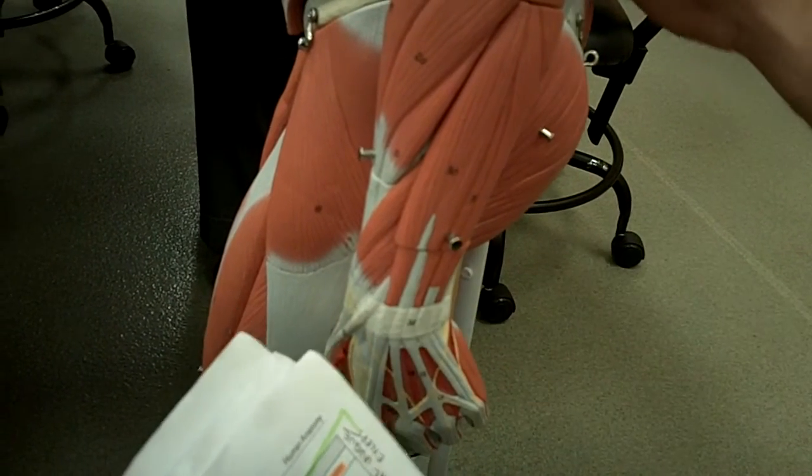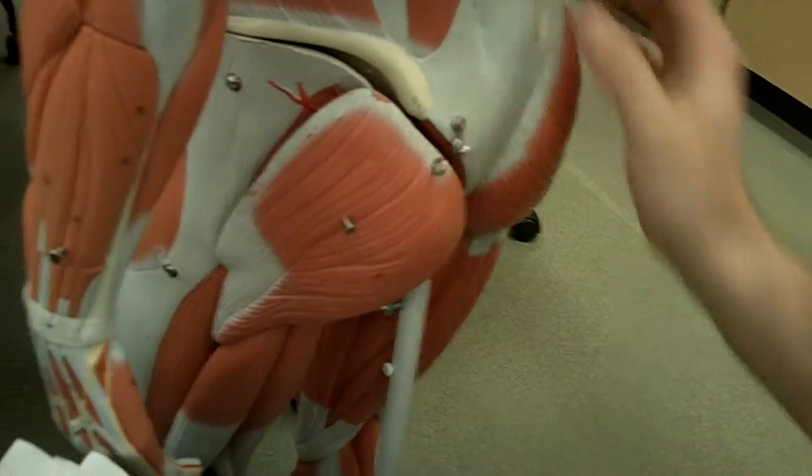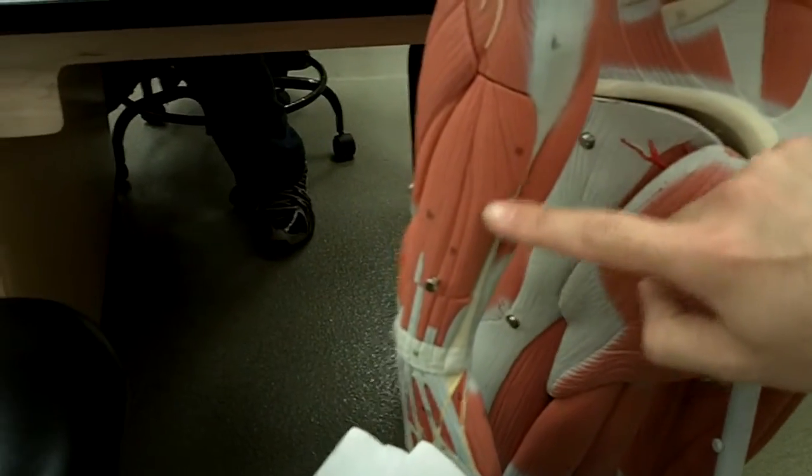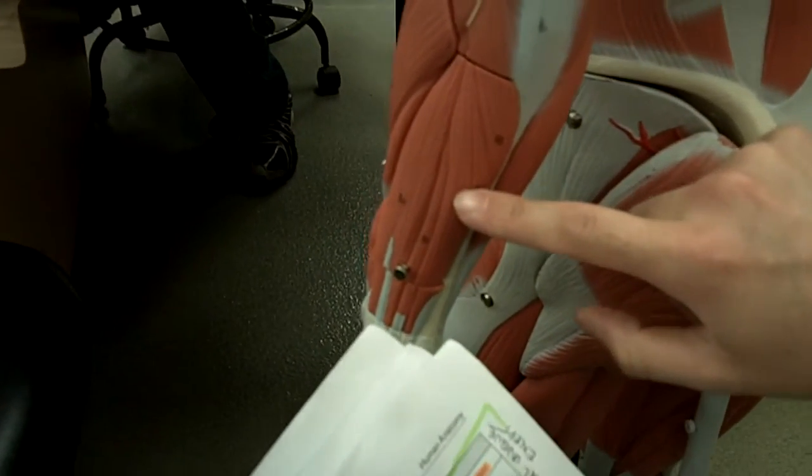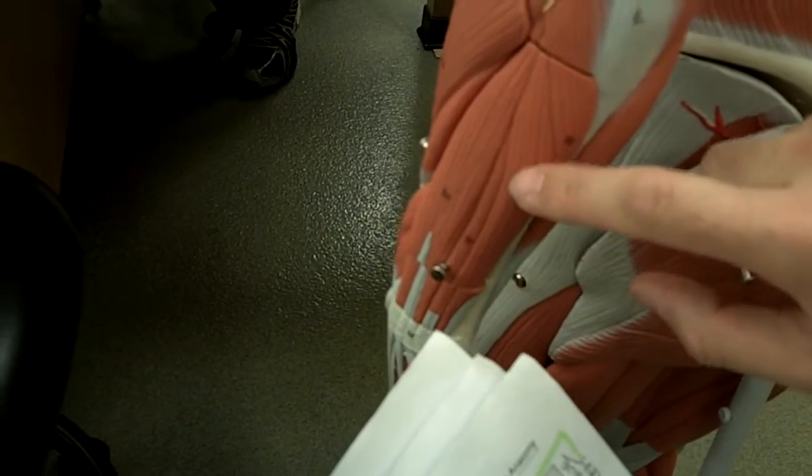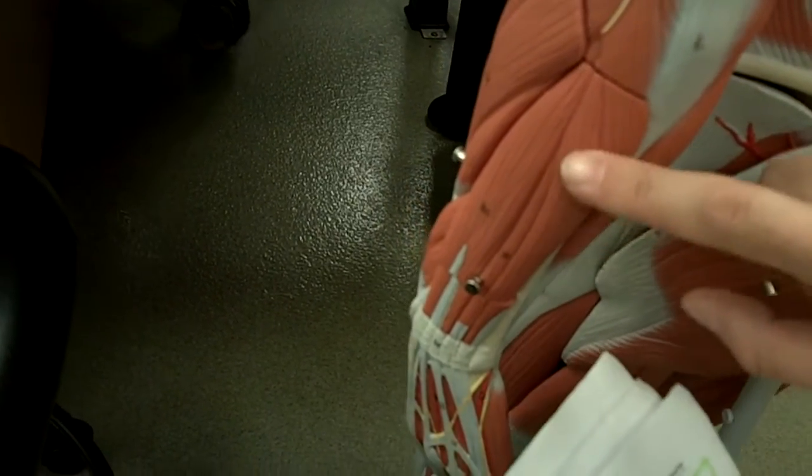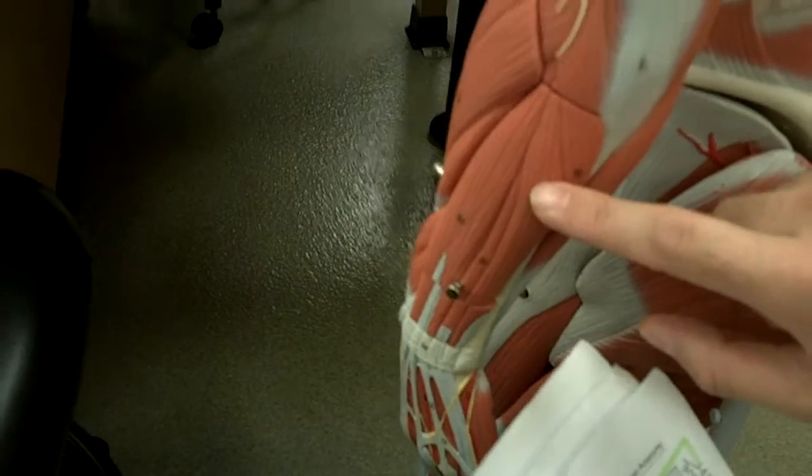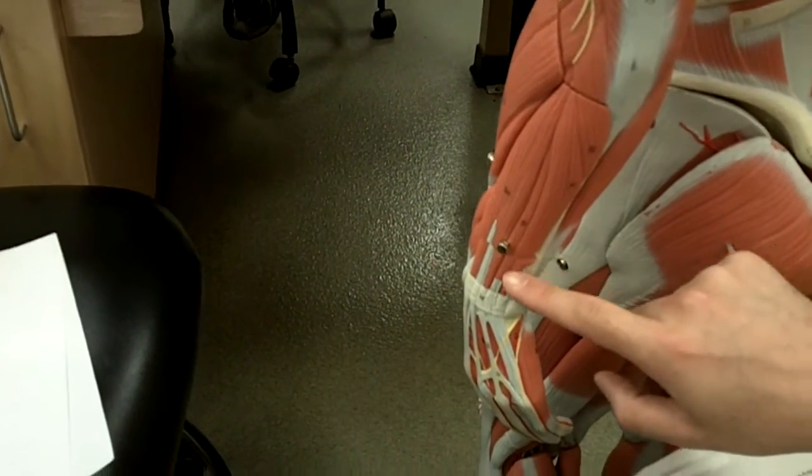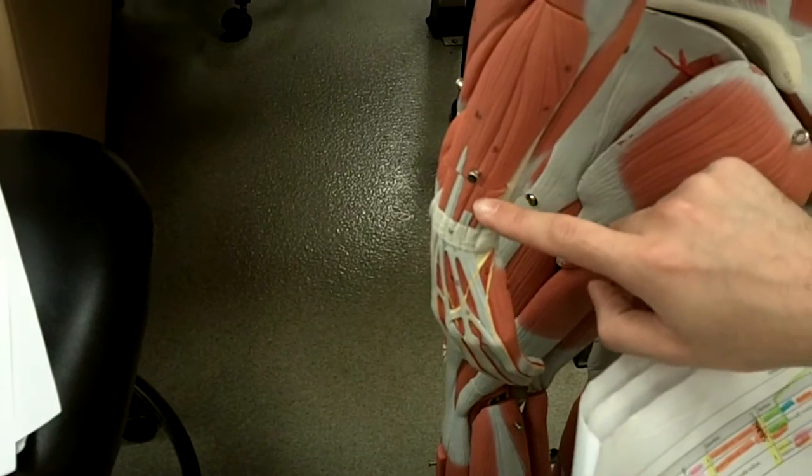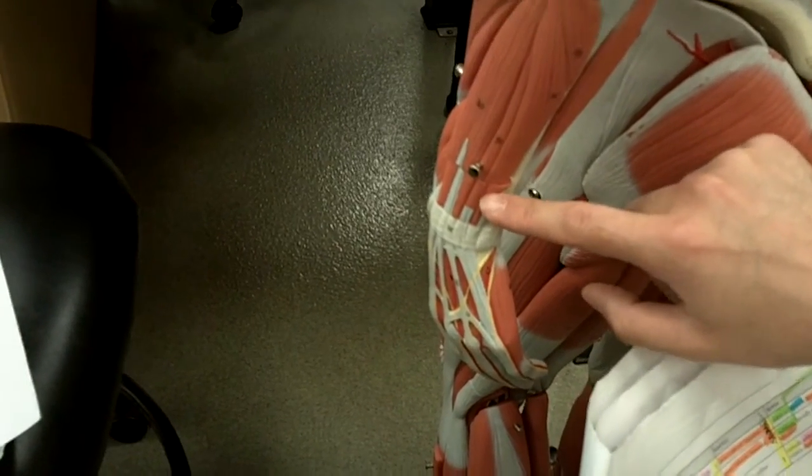The next and last muscle is the extensor carpi ulnaris. This originates on the lateral epicondyle of the humerus and the posterior ulna. You can see we're on the backside of the arm now, the posterior side. It inserts on metacarpal five, near your pinky down here. Its action extends and adducts the wrist.